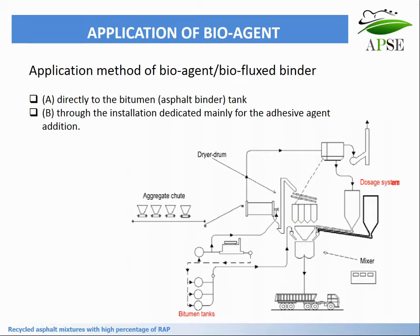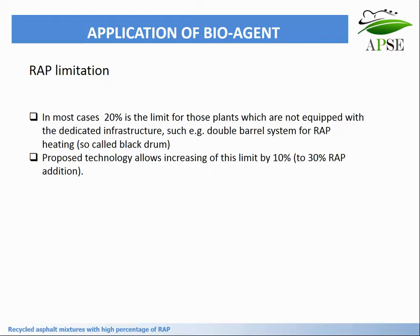The application of bio-flux in a plant was proposed with two different setups: directly to the bitumen tank, or through an installation dedicated mainly for adhesive agent addition. In most cases, 20% is the RAP limit for plants not equipped with dedicated infrastructure such as a double barrel system. The proposed technology allows for increasing this limit by 10%, up to 30%. Much higher improvement is possible, but this safe value was what was proven.